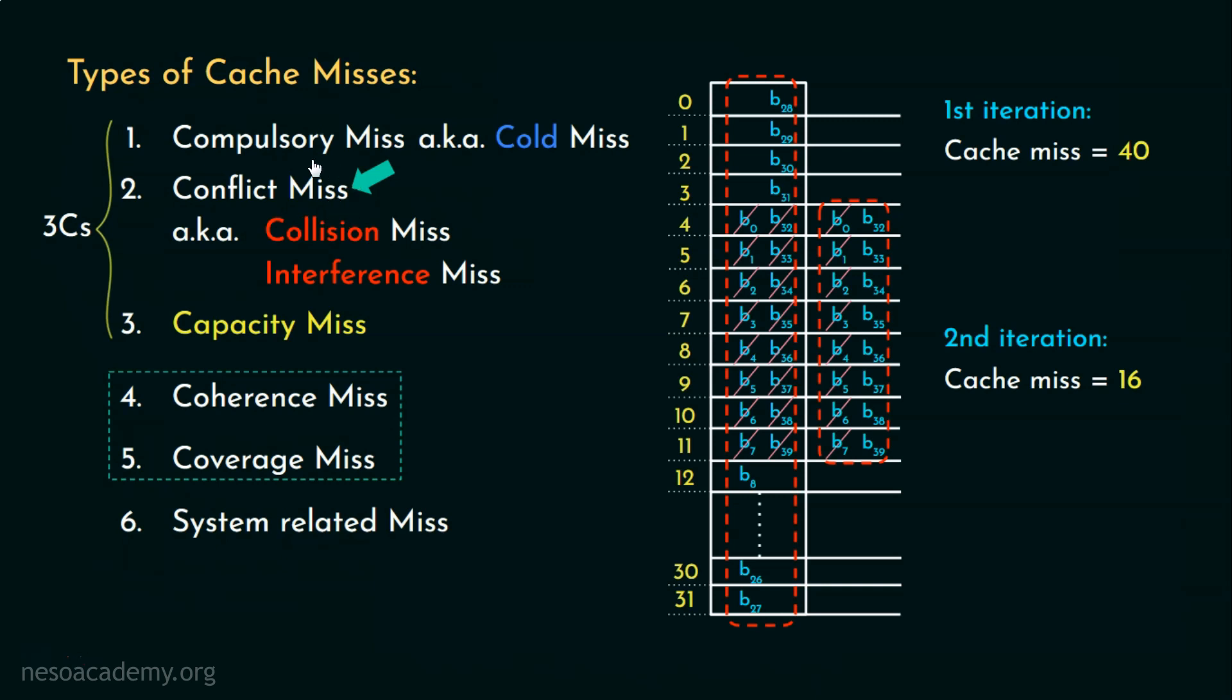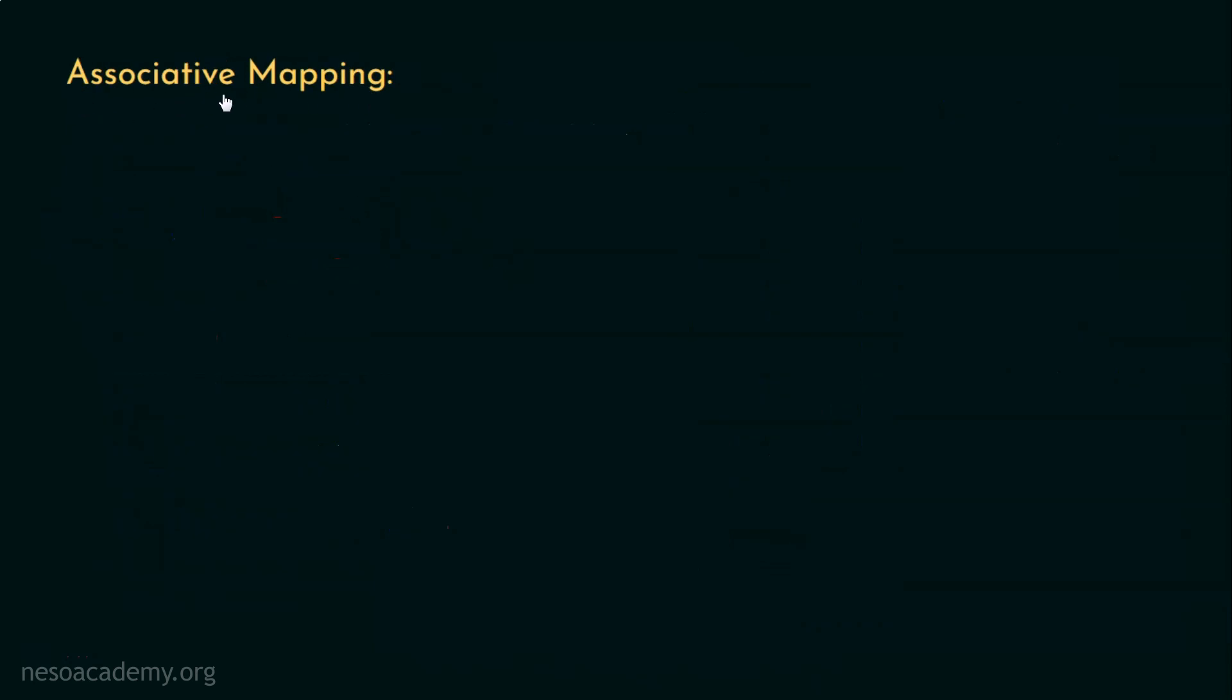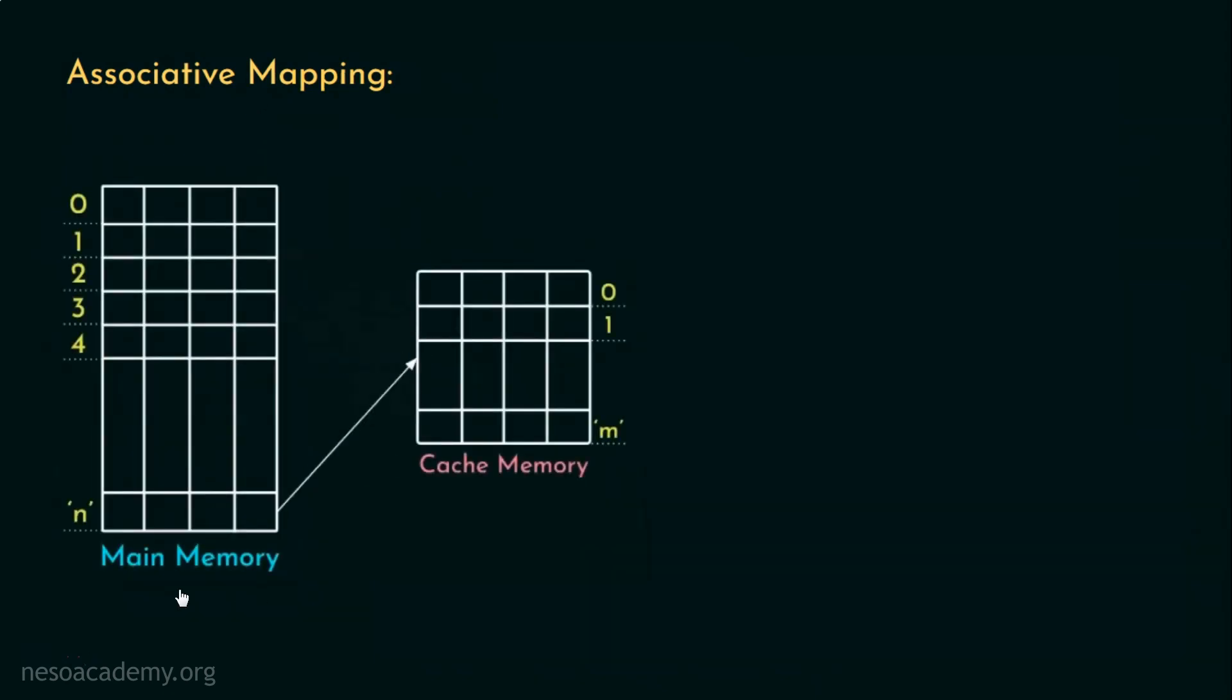The solution to direct mapping's conflict miss problem is associative mapping and in associative mapping there are no restrictions regarding the mapping technique. What I'm trying to mean is, any block can be assigned to any of the cache lines. Yes, and for this technique,